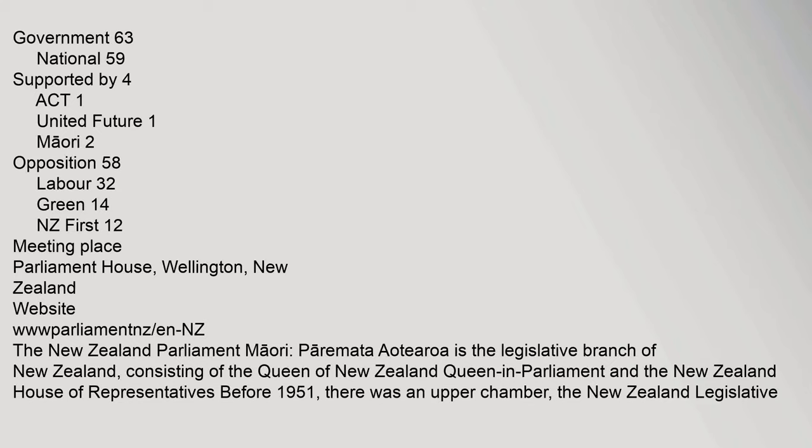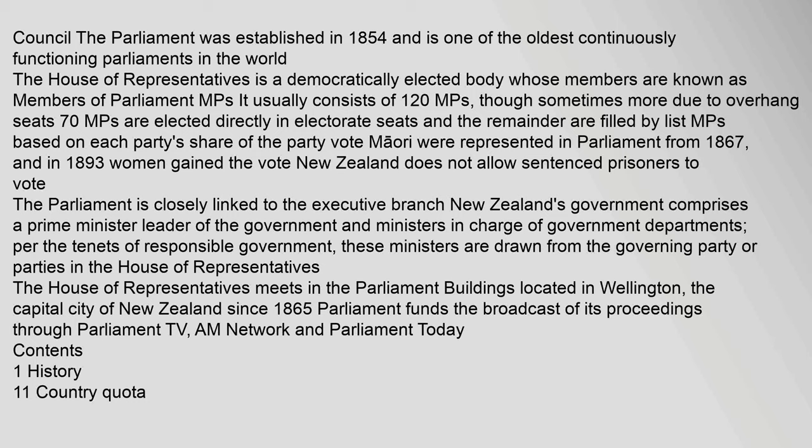Government 63. The Parliament was established in 1854 and is one of the oldest continuously functioning parliaments in the world. The House of Representatives is a democratically elected body whose members are known as Members of Parliament (MPs). It usually consists of 120 MPs, though sometimes more due to overhang seats. 70 MPs are elected directly in electorate seats and the remainder are filled by list MPs based on each party's share of the party vote. Māori were represented in parliament from 1867.